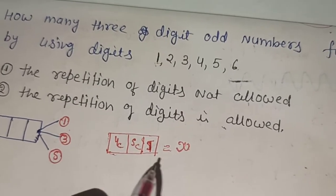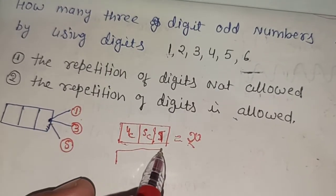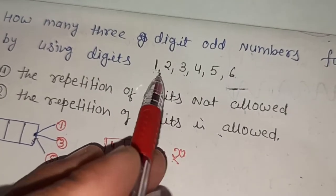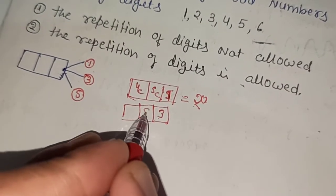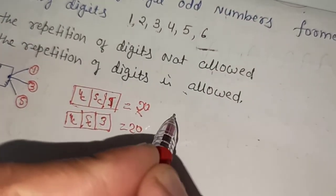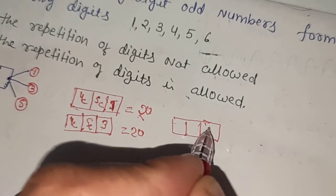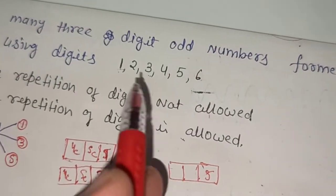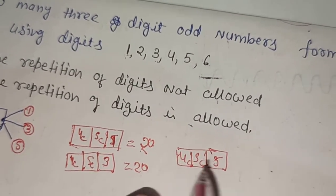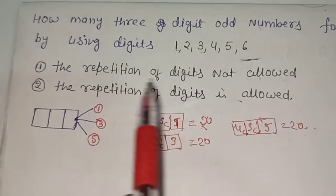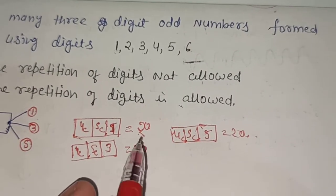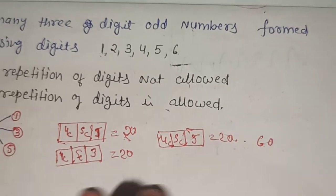So the total is 5 × 4 = 20 numbers. Similarly, if we place 3 in the ones place, the remaining five digits give five choices for hundreds and four for tens — again 20 numbers. The same applies when placing 5 in the ones place: five choices and four choices, giving another 20. So the total is 20 + 20 + 20 = 60 numbers when repetition is not allowed.